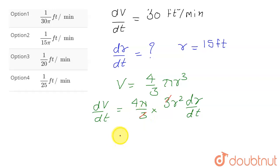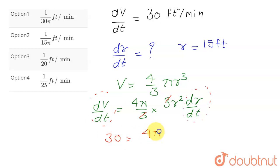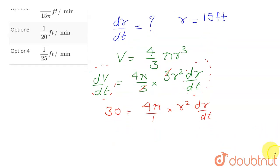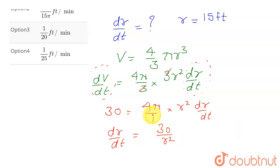Now I need to solve for dr/dt. We know dV/dt = 30 cubic feet per minute. Substituting: 30 = 4πr² · dr/dt. Therefore, dr/dt = 30 / (4πr²). Note: I had initially forgotten the 4π factor, but the correct expression is dr/dt = 30 / (4πr²).